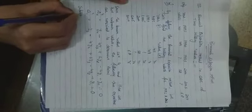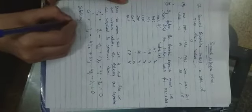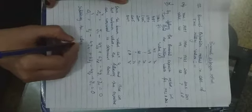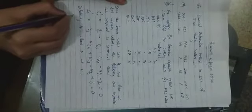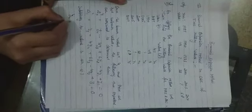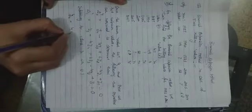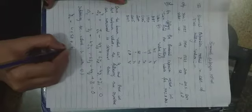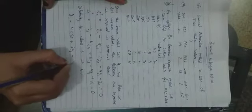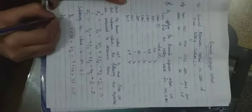Now substitute the values in equation 1. So y4 minus 4 times 52 plus 6y2 minus 4 times 49 plus 40 is equal to 0. So y4 minus 208 plus 6y2 minus 196 plus 40 is equal to 0.